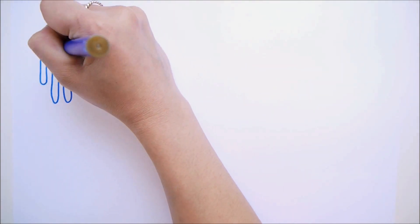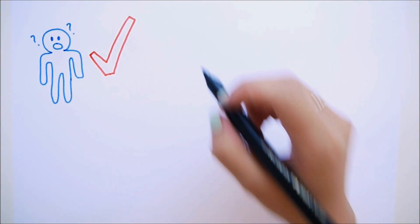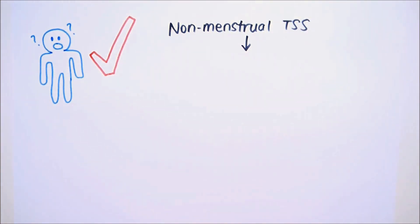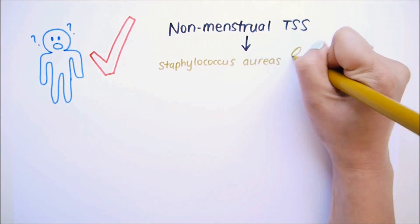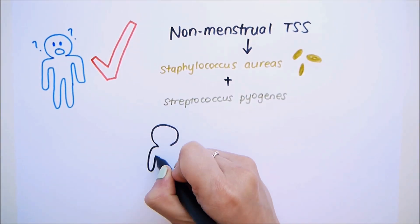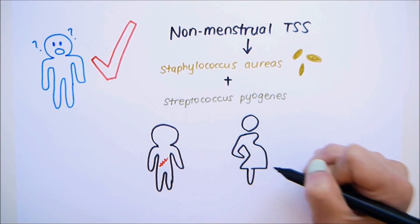But did you know that men can get TSS as well? Yep, that's right. Tampons aren't the only breeding grounds for TSS. Non-menstrual TSS, those not associated with periods, are caused by both Staphylococcus aureus and another nasty Streptococcus pyogenes, and can be a result of surgery, childbirth, or even the flu.